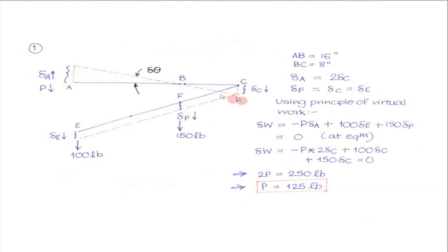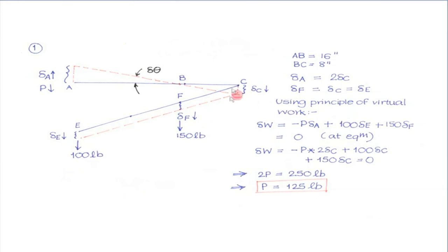The entire trick was in recognizing that member ABC undergoes rotation while EDFC undergoes pure translation, and the compatibility condition delta A = 2 · delta C must be satisfied. Once we satisfy that, we are done. If you try solving this using Newton's law it is not a big deal, but you have to draw two free body diagrams. Here, one recognition immediately gives the answer for P to maintain equilibrium.